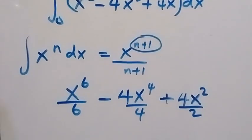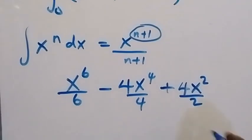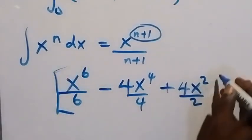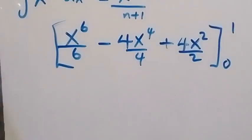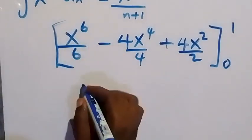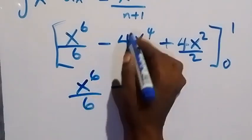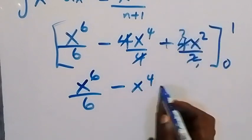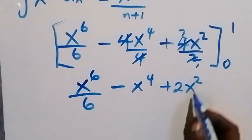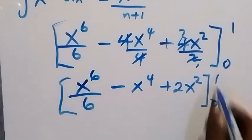We don't add a constant because we are working with a definite integral. Now we simplify before applying the limits. We have x⁶ over 6, then the 4 cancels with 4 to leave x to the power 4, and 4 over 2 simplifies to give plus 2x², evaluated from 0 to 1.